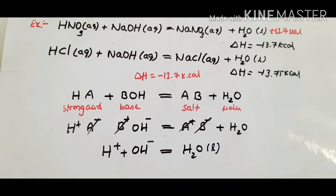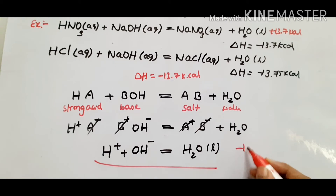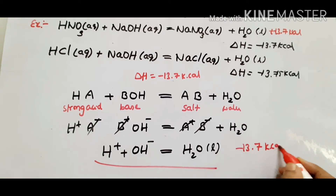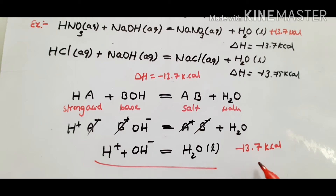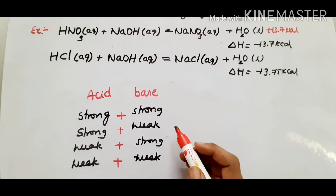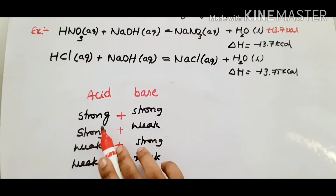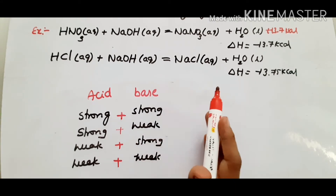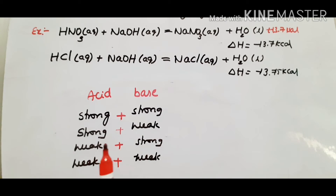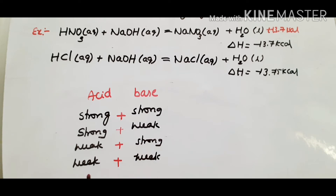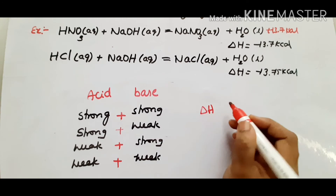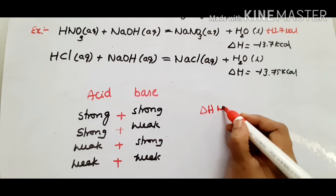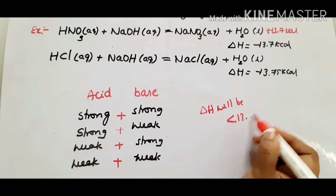These are possible different combinations of acid and base. Strong acid and strong base neutralize. Then strong acid and weak base neutralize. And weak acid and weak base neutralize. In those cases, the enthalpy value N will be less than 13.75 kcal.